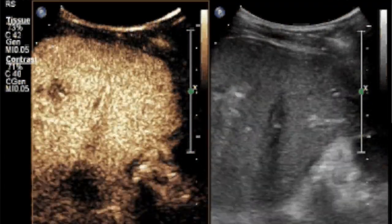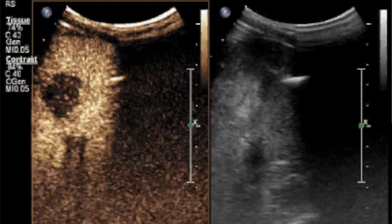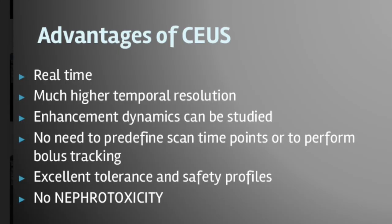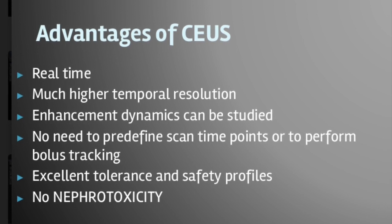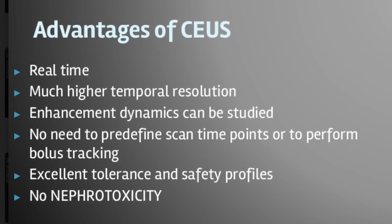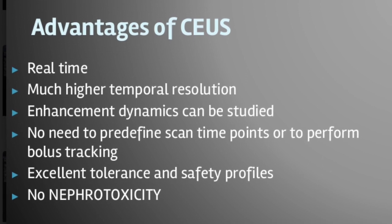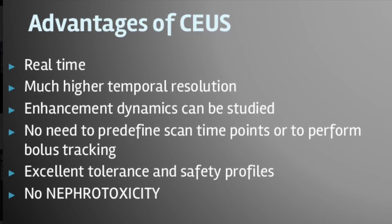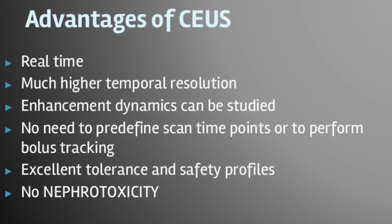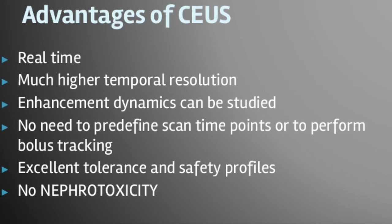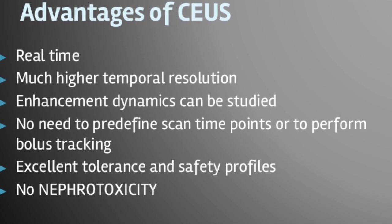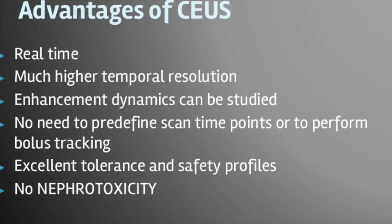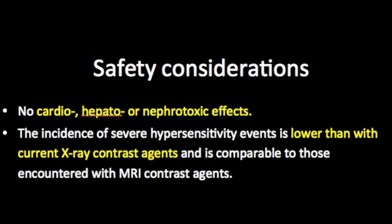The advantages of contrast ultrasound are: first, it's real time; second, we have very good temporal resolution; and third, there's no need to pre-define scan times as we do in CT and MR. The biggest advantage is the absence of nephrotoxicity. In patients with renal failure where we cannot do a CT or MR contrast study, we can go ahead and do a contrast ultrasound because these agents are microbubbles excreted through the lungs into the air, with no nephrotoxicity or hepatotoxicity at all.